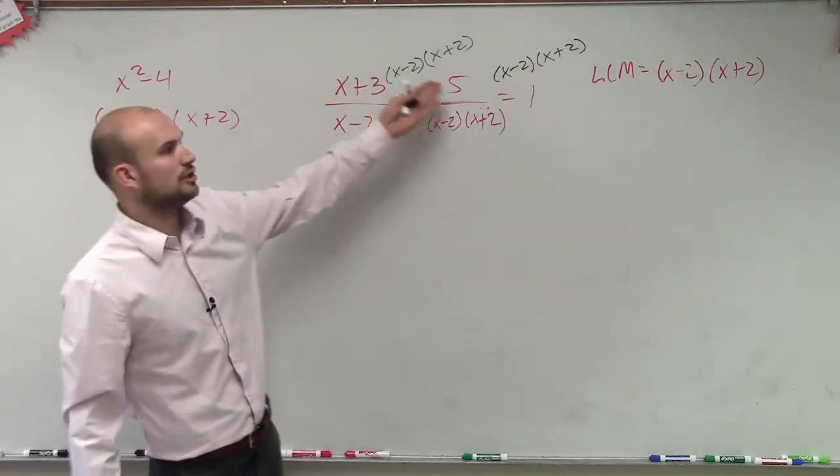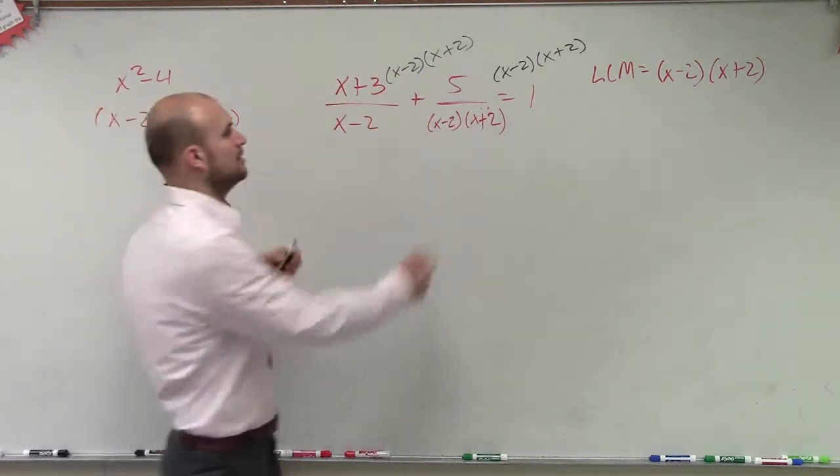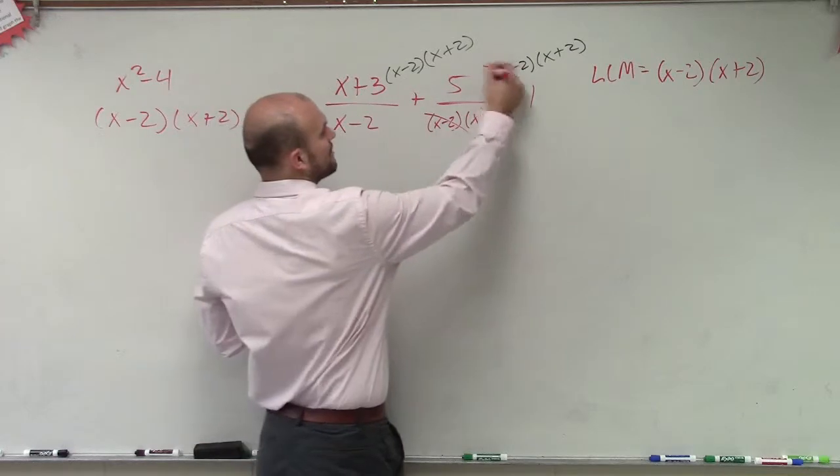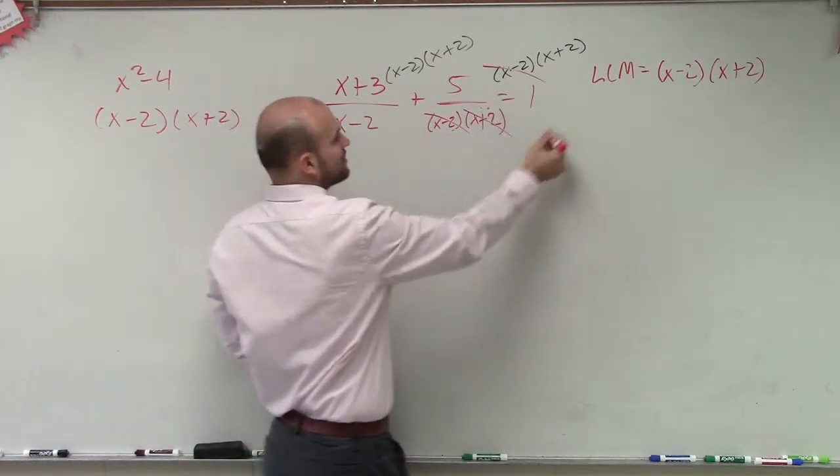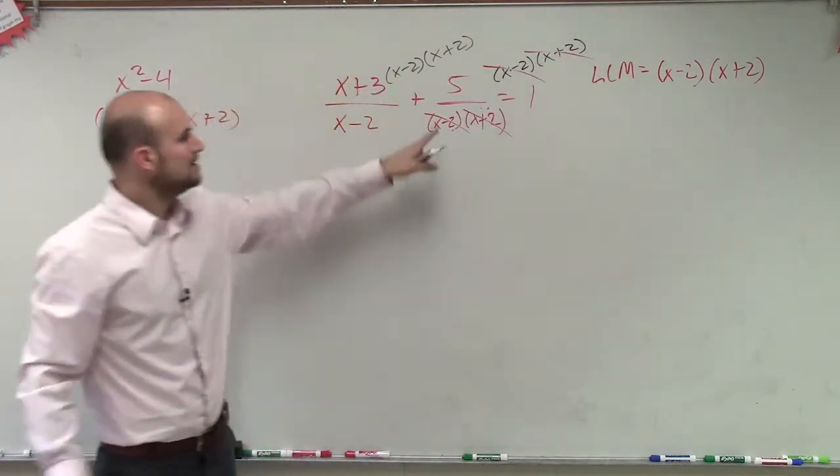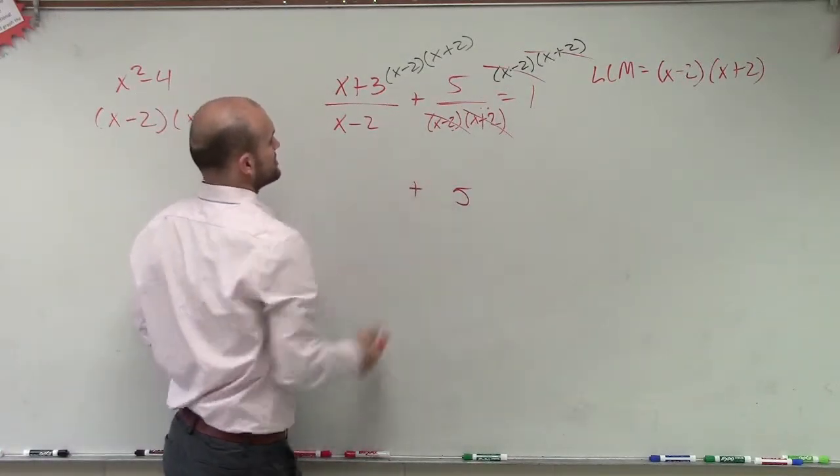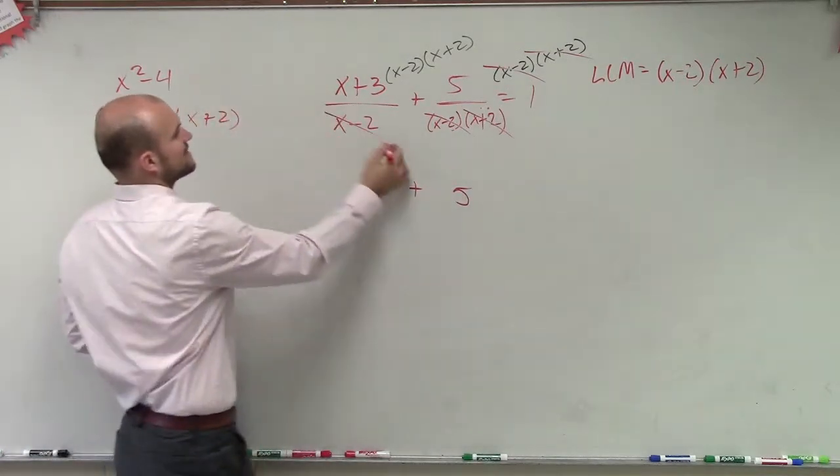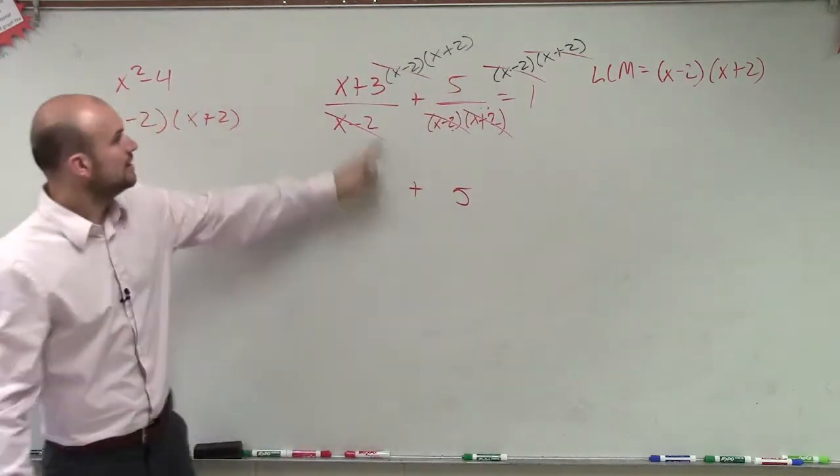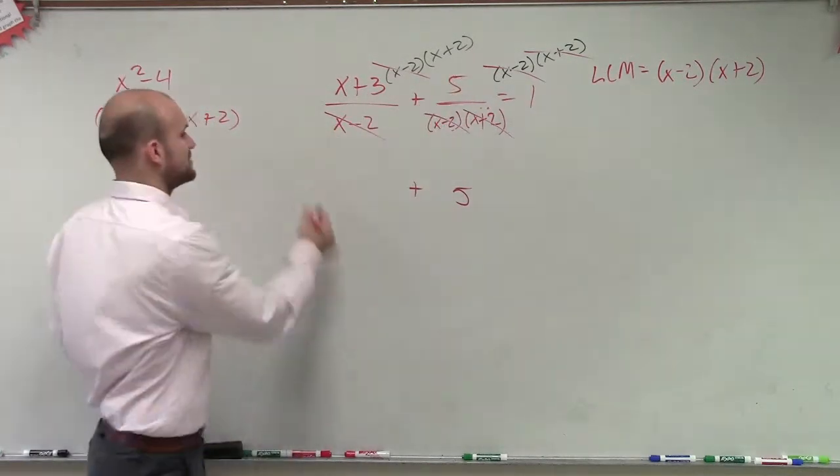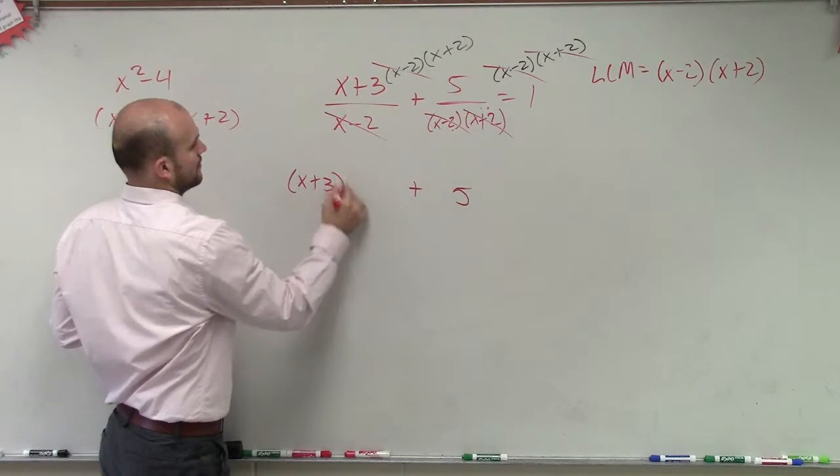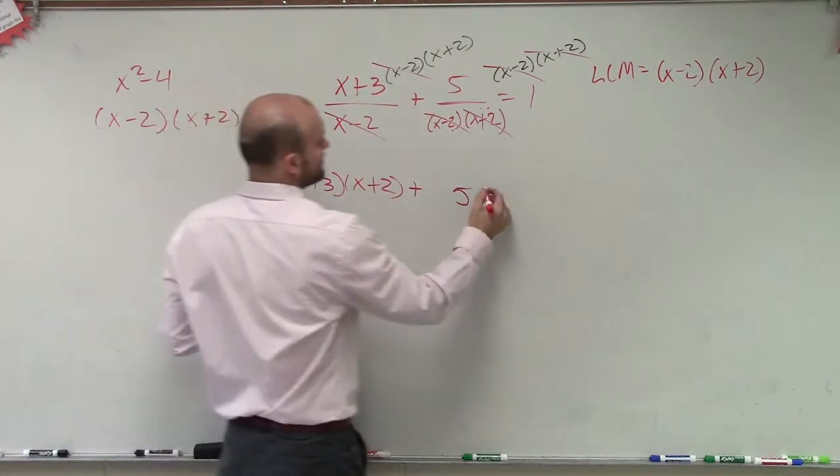Well, what I notice is these are all in the numerator. These are in the denominator. What you notice is x minus 2 divided by x minus 2 is 1. x plus 2 divided by x plus 2 is 1. So really, all I have here is 5 plus. Here, the x minus 2 divided by x minus 2 goes to 1. But then I have x plus 3 times x plus 2 plus 5.